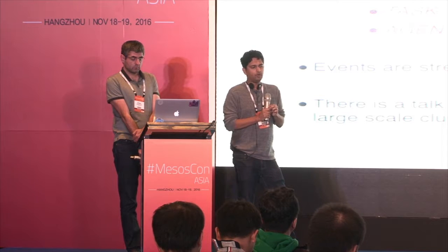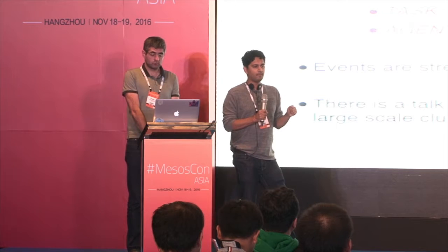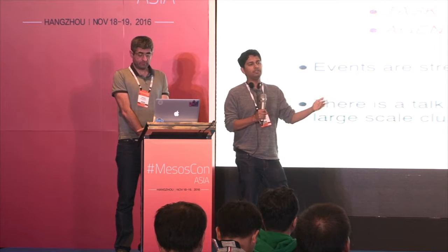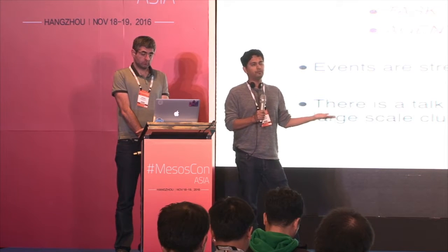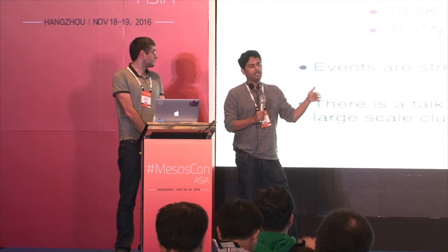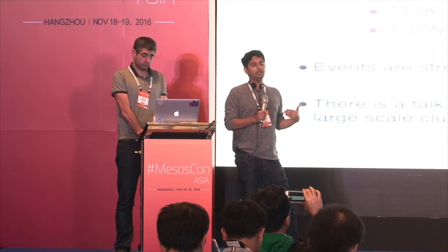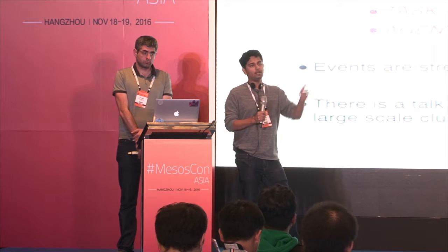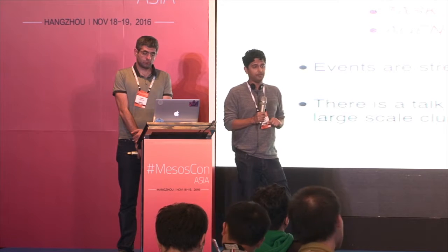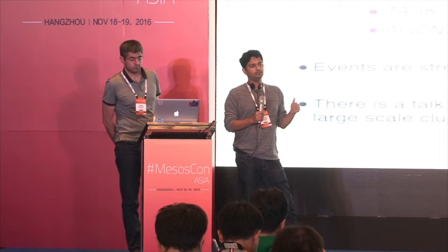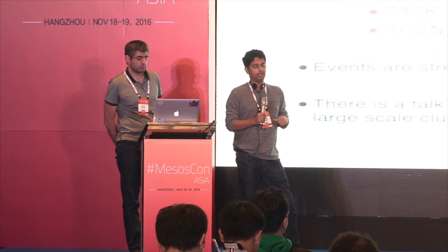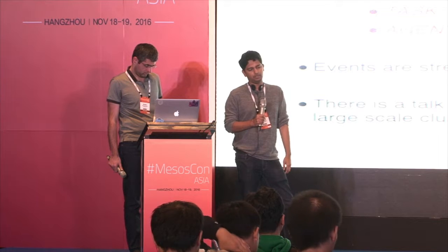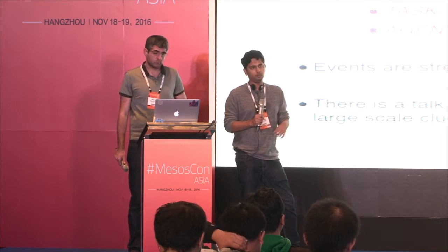Mesos 1.0 introduced experimental support for event streaming in the V1 operator API. This primitive allows a data center operator to subscribe to events happening on their cluster. We currently support four types of events: task_added and task_updated — every time a task is launched or changes state (from staging to running, or running to finished) — and agent_added and agent_removed — every time an agent is added to or removed from your cluster. All events are streamed on a persistent connection.